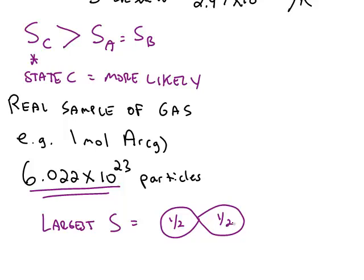When you obtain a state with a larger value of S, that's the more likely state. It's not impossible for all the particles to end up on one side, but it's very unlikely.